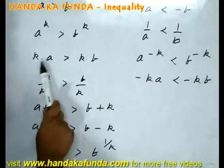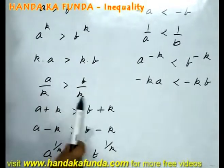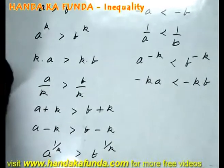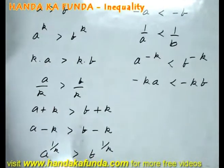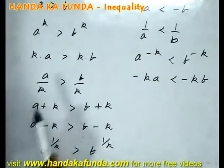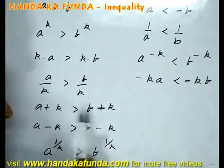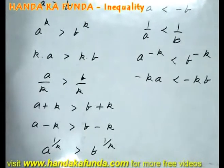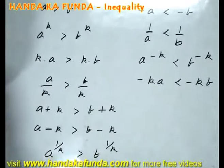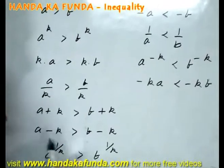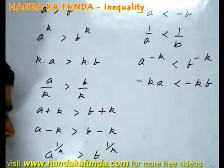If I multiply both sides with the same number, or divide both sides by the same number — once again k has to be positive — the inequality sign does not change. Similarly, if I add the same value to both sides or subtract the same value from both sides, the inequality sign does not change.